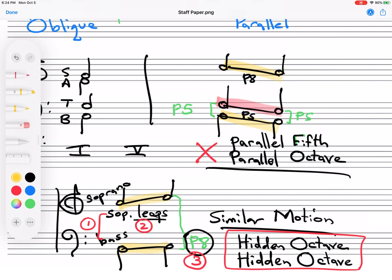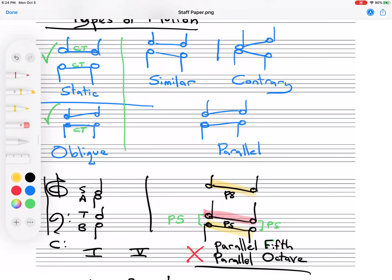There's one final type of parallel that is not allowed. Unequal-fifths. So this is a very specific case. You probably won't see this too often. One of the voices is going to be the bass. It's going to move from a diminished fifth to a perfect fifth. It's a type of parallel motion, but it's not exactly parallel. Because if you notice, the bass is moving a half-step. And the soprano is moving a whole step. And this is what it sounds like. These are unequal fifths.